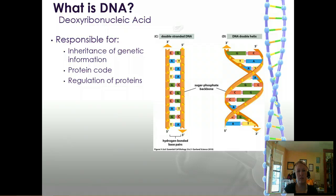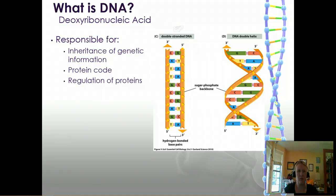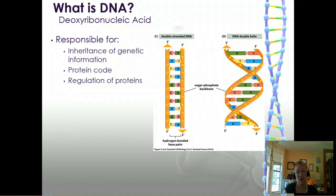So let's start by talking about what DNA is. DNA stands for deoxyribonucleic acid, and it's responsible for the inheritance of genetic information — this is the blueprint for everything that we are. It's the reason why you have the hair color you have, why your eyes are the color they are, and why you sunburn or tan the way you do.